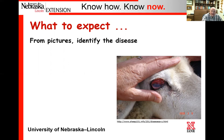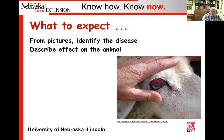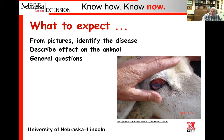Another thing we might do is actually bring out a live animal — it will be a healthy animal. We may say, for this given disease, whatever it might be, describe where you might see the symptoms being manifested in this animal, or describe and show where you would look to identify issues. And then, of course, we will probably incorporate a few general questions. All the questions would come from the information we're providing on those 10 basic diseases.